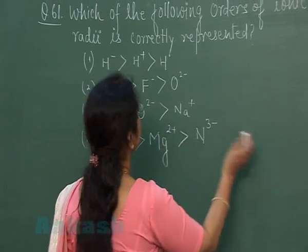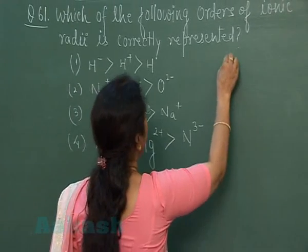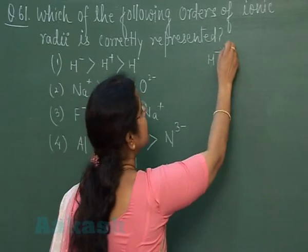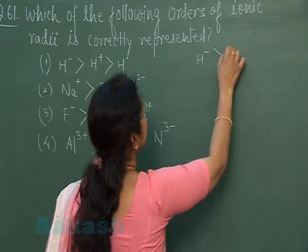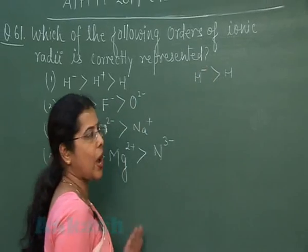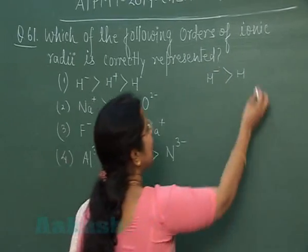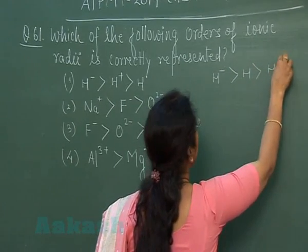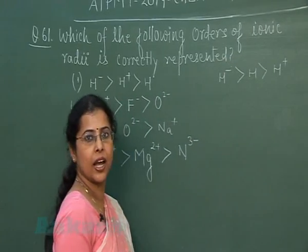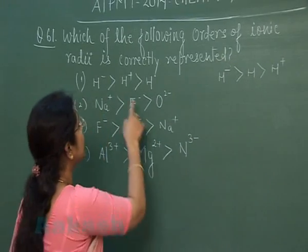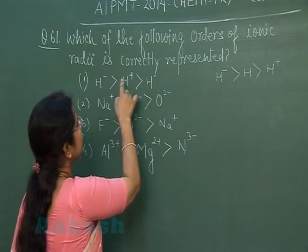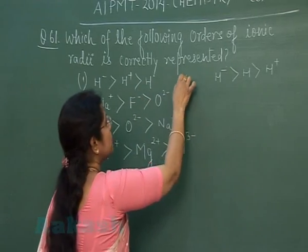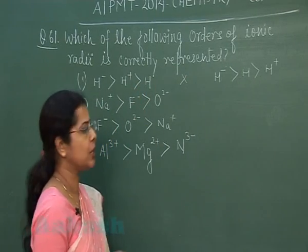The first option gives the hydride ion order as H⁻, H⁺, H. As we know, an anion is always larger than the neutral atom, and the neutral atom is larger than the cation. So the correct order should be H⁻ > H > H⁺, but the given order is H⁻, H⁺, H. So the first option is incorrect.